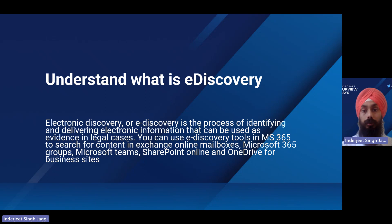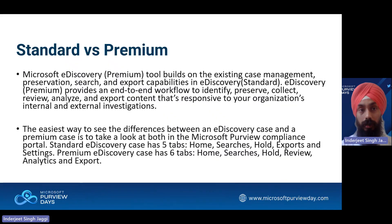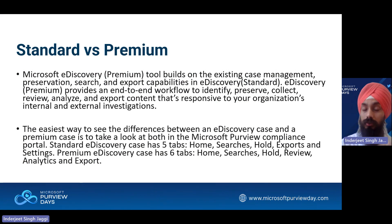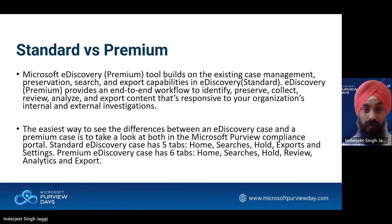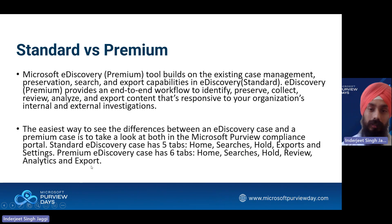We need to make sure that we preserve those evidences, we are able to take care of evidence, we are able to search and preserve it as and when needed. We'll talk about two versions — really two of three versions — which are Standard and Premium. Standard is a very basic version with features like search, hold, export, and settings, whereas in Premium you'll be able to see search, hold, preview, analytics, exports, and settings.